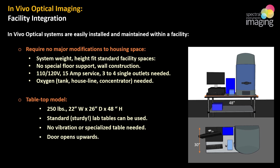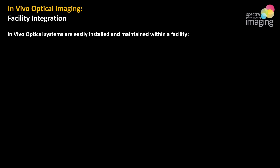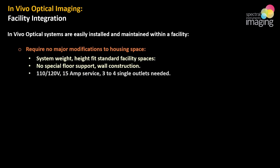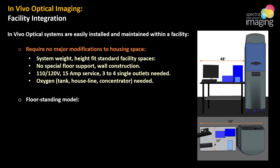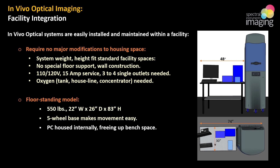With the floor standing systems, we have the same standard needs, but there's a big difference in height — these systems are nearly seven feet tall, coming in at about 550 pounds. The footprint is actually exactly the same as the tabletop. They come on five casters, which make movement easy, and the PC is housed internally, freeing up some bench space. These systems fit easily even into tight spaces. In this illustration, the width needed for the four-foot table and the unit is only six feet two inches.